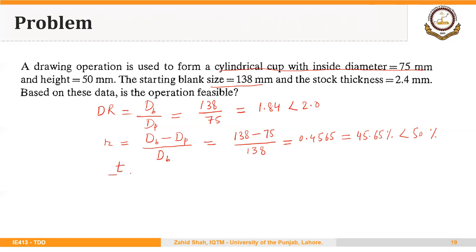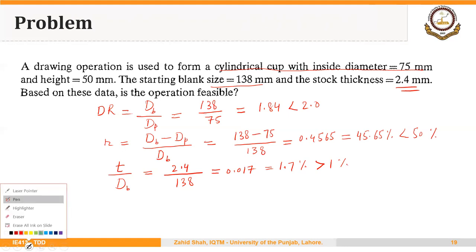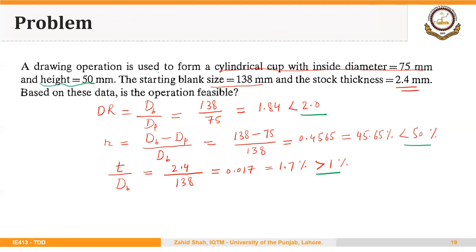Similarly, the thickness-to-diameter ratio — where the diameter here is the blank diameter — gives 2.4 divided by 138, which is approximately 0.017, or as a percentage, 1.7%. That is greater than 1%. Since all three measures have acceptable values — the drawing ratio is less than 2, the reduction is less than 50%, and the thickness-to-diameter ratio is greater than 1% — we can say that this drawing operation is feasible. The cylindrical cup with a height of 50 mm and a diameter of 75 mm can be made in one operation.